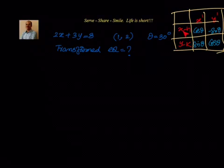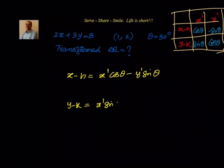Let's look at where is x here. x minus h equal to x dash cos theta minus y dash sin theta. Similarly, y minus k equal to x dash sin theta plus y dash cos theta. So let's write down that: x minus h equal to x dash cos theta minus y dash sin theta. We will leave space for simplification.